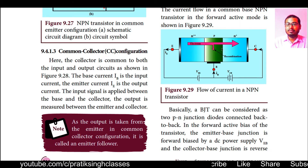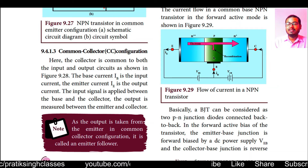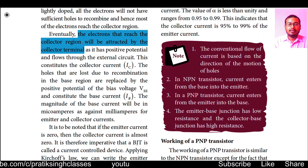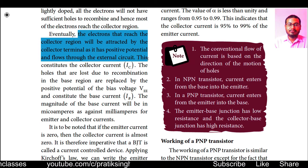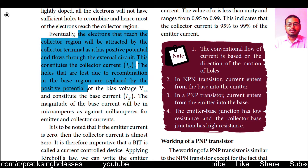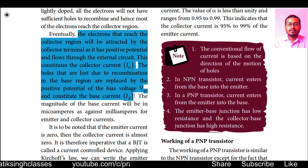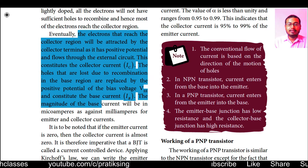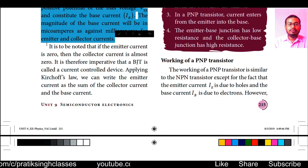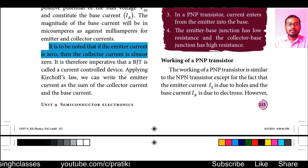The base is lightly doped, so the number of holes is less than the number of electrons coming from the emitter. After all holes recombine with electrons, the remaining electrons move towards the collector region. The electrons reaching the collector are attracted by the positive potential of the collector terminal and flow through the external circuit, constituting the collector current. The holes lost due to recombination in the base region are replaced by the positive potential of bias voltage VEE, constituting the base current IB. The base current magnitude is in microamperes, compared to milliamperes for emitter and collector currents.